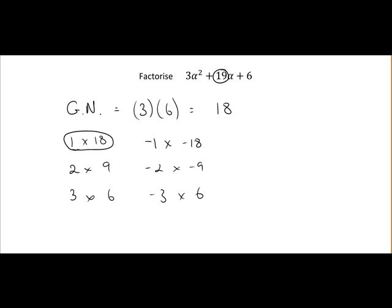So we will use that to rewrite our equation here. So we have 3α². Instead of +19α we will break it up. So we put +18α + α + 6. So instead of 19α we have 18α + 1α.